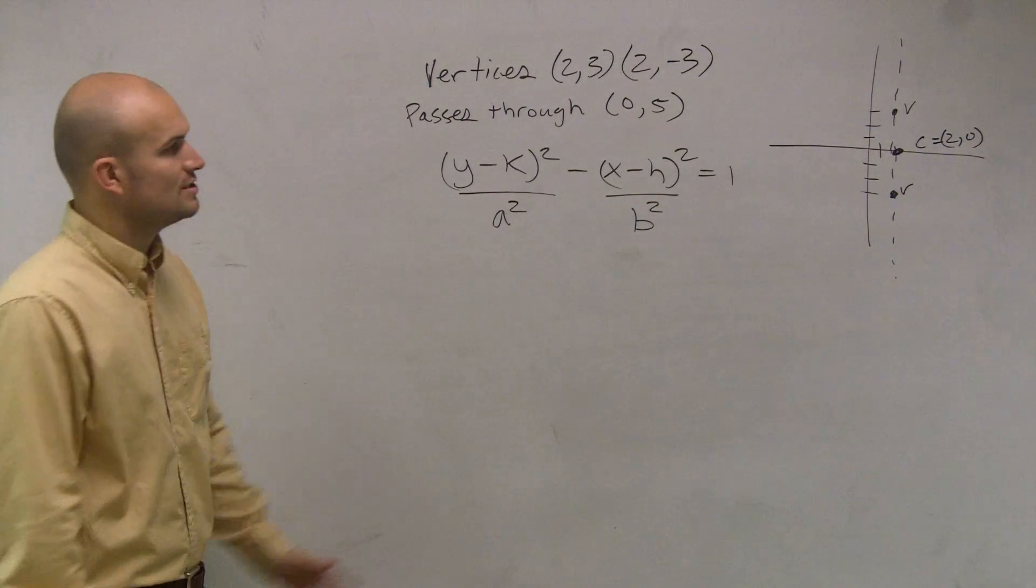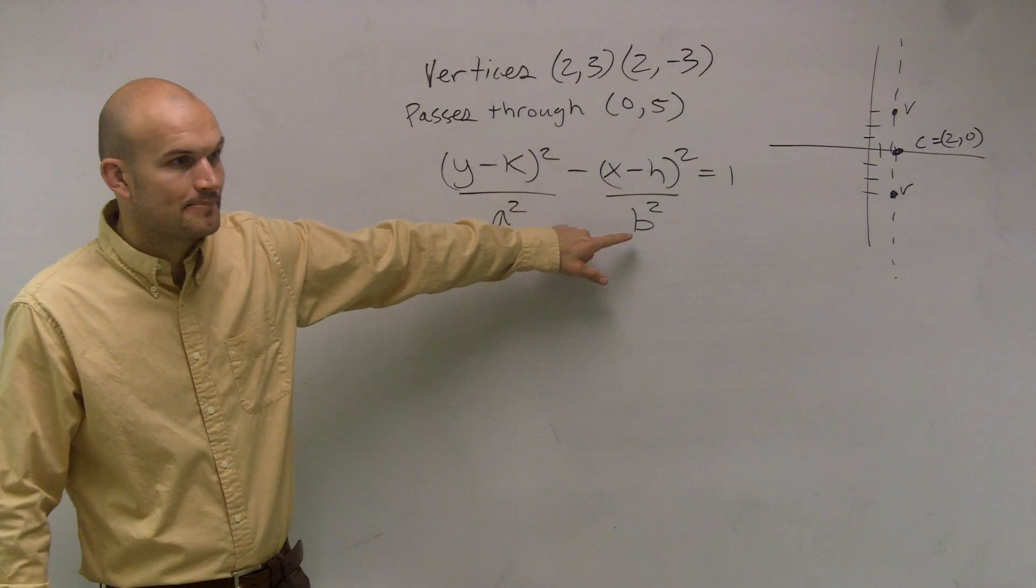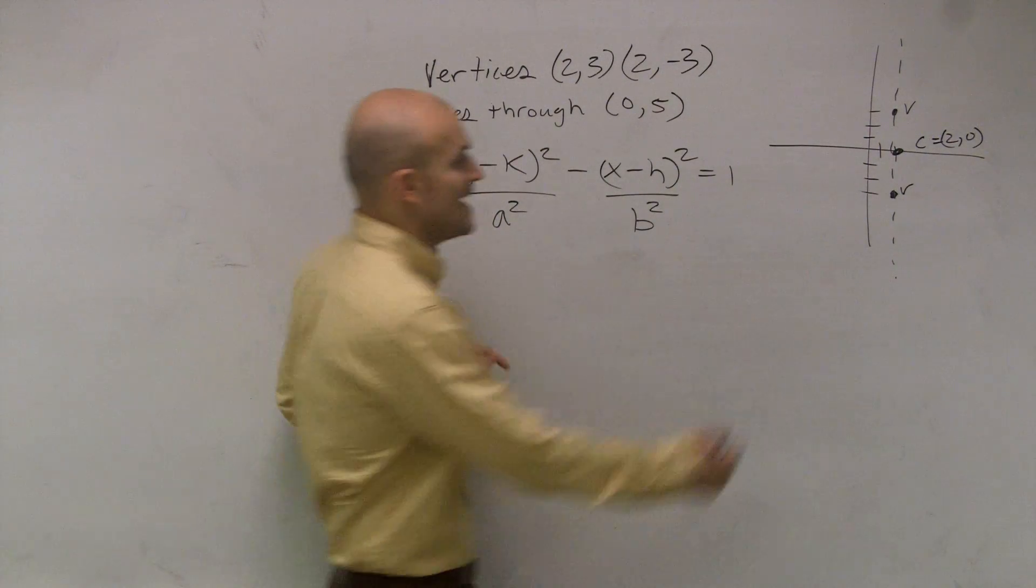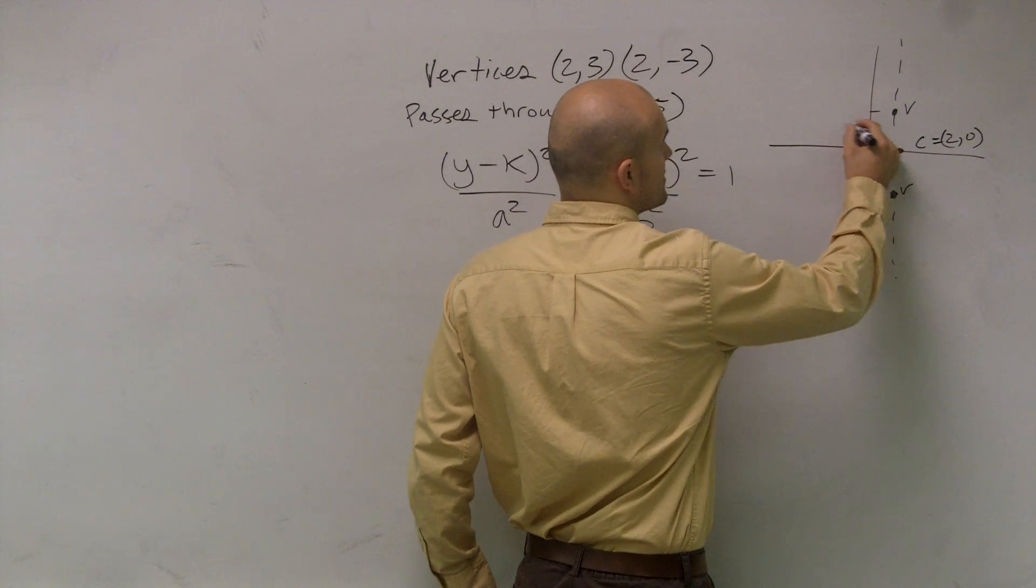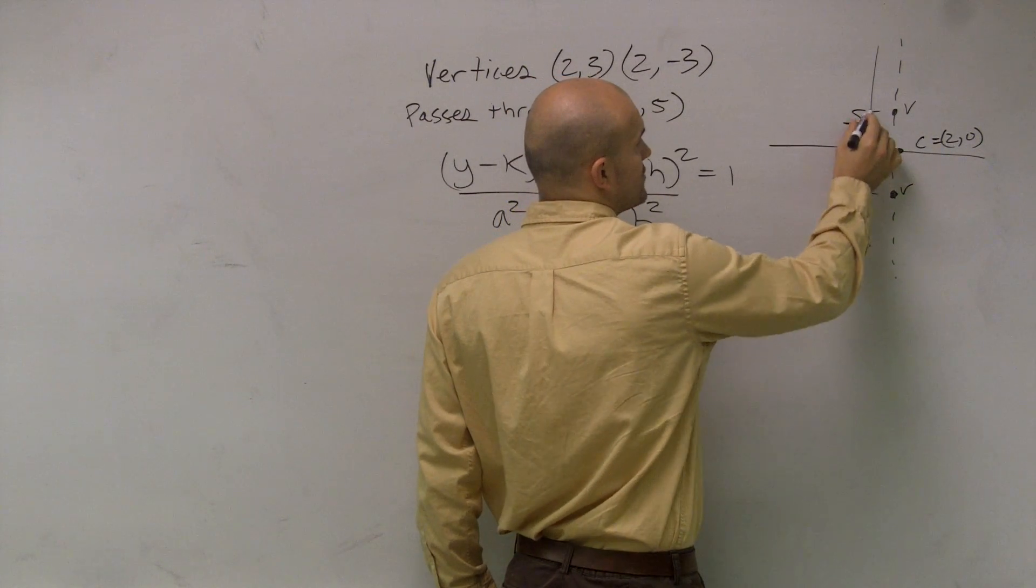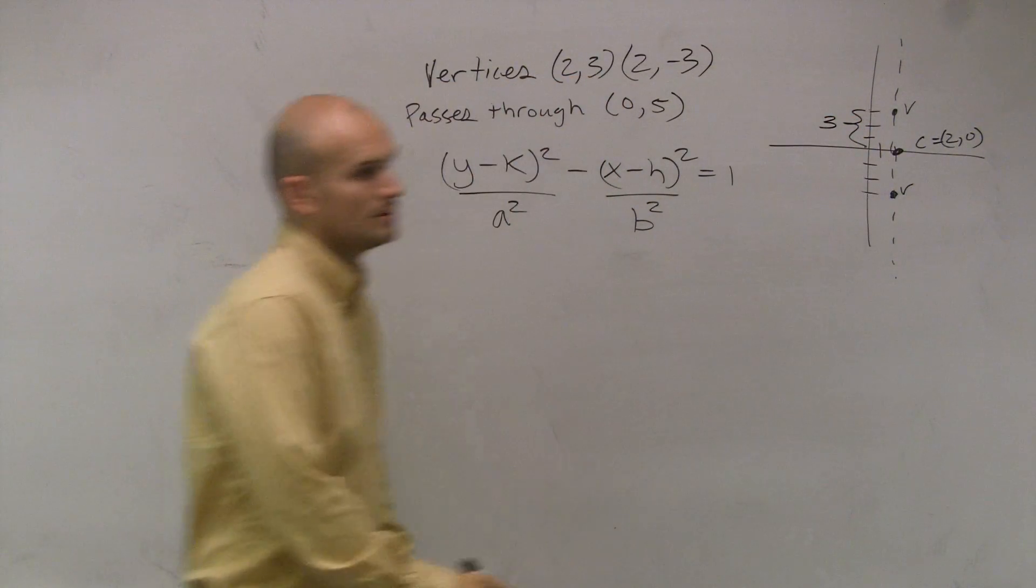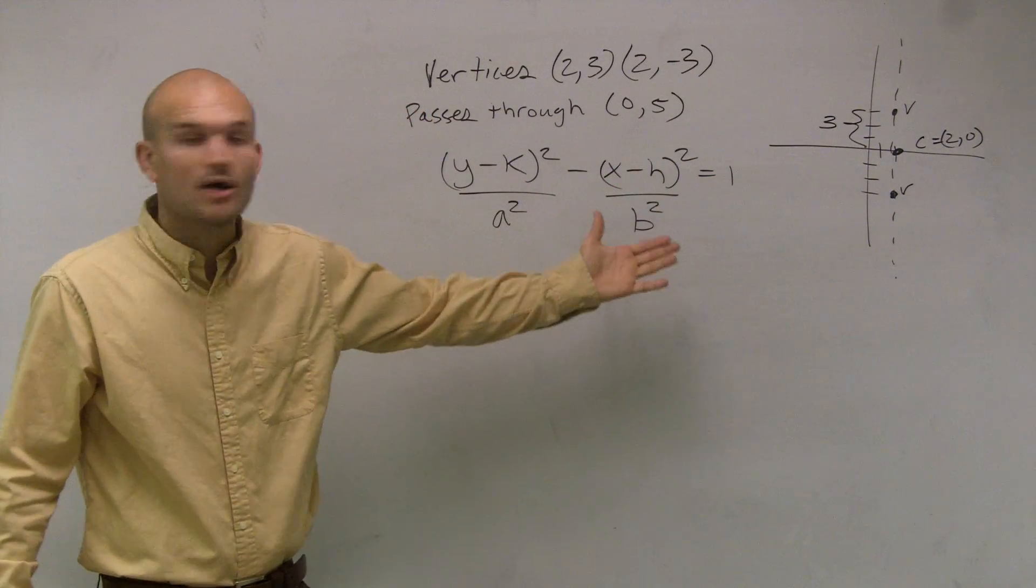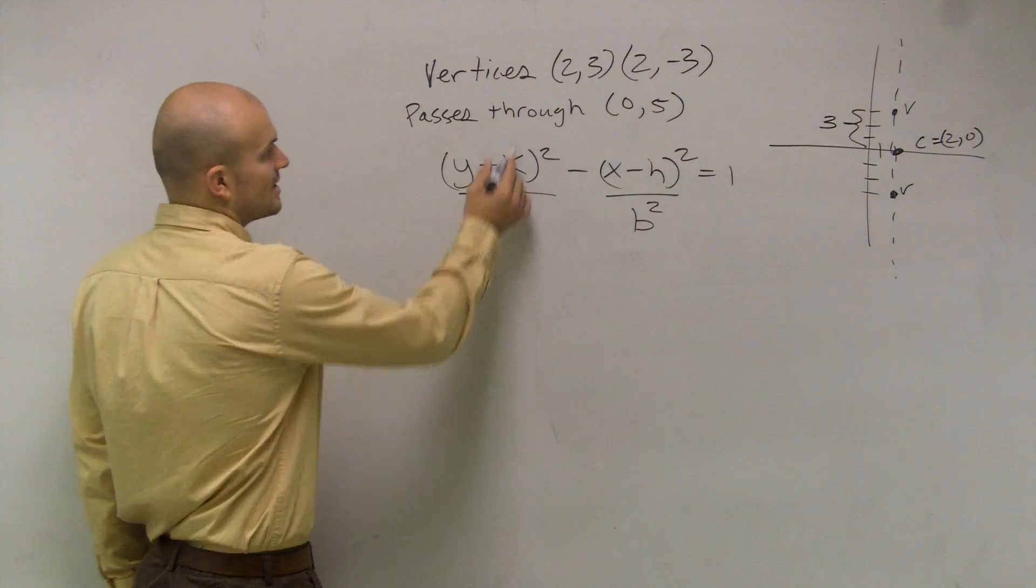So now, ladies and gentlemen, what I'm going to do is, I do not know what b is, do I? I have no idea what my b is. I do know what my a is because a is your distance from your center to your vertices, which is 1, 2, 3. So all I need to do is, I just need to figure out, I need to plug in my points and just figure out what b is going to be.